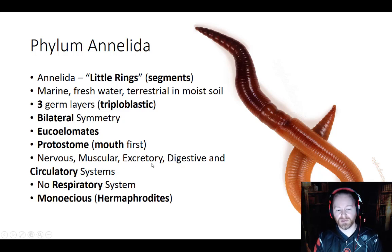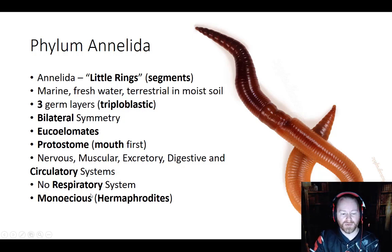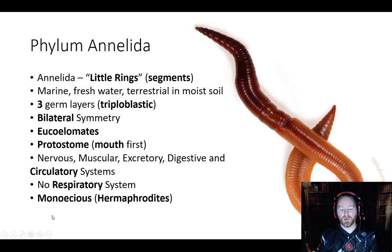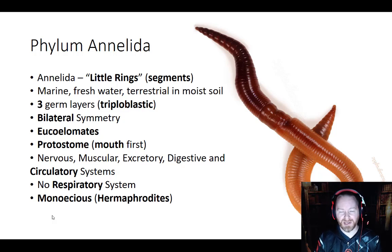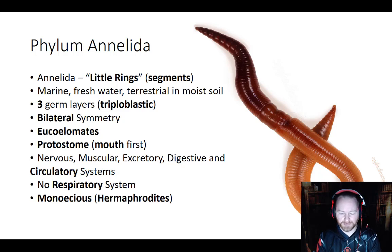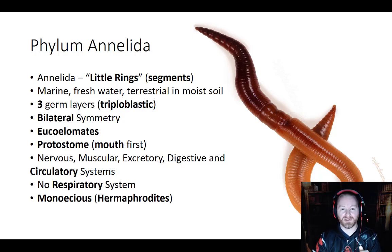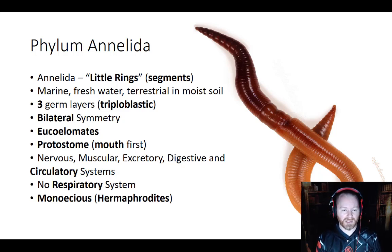Annelids have a nervous system, a muscular system, an excretory system, a digestive system, and for the first time we're going to see a circulatory system. They still don't have a respiratory system; gas exchange still has to work by diffusion. These are mostly monoecious — mostly hermaphrodites. With annelids they're not extremely numerous or in high density areas, so the likelihood of finding another member of your species is pretty low, and the right gender even lower. By being a hermaphrodite, as long as you find another member of your species, reproduction can happen.